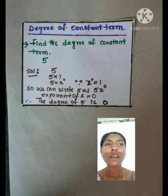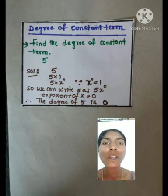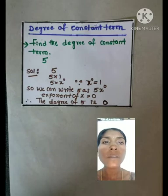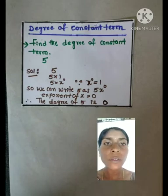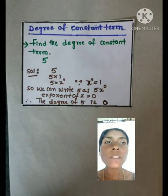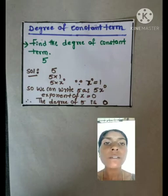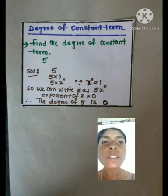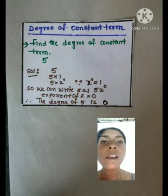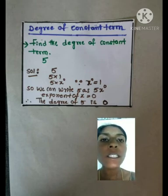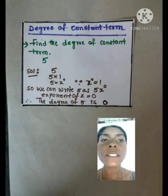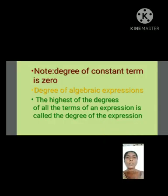Now we have to find the Degree of a Constant Term. The degree of the constant term 5: multiplying 5 by 1 gives 5. Since x to the power of 0 equals 1, we can write 5 as 5 × x⁰. There is one variable x, and the exponent of x is 0. So the Degree of 5 is 0. Note: the Degree of any Constant Term is 0.